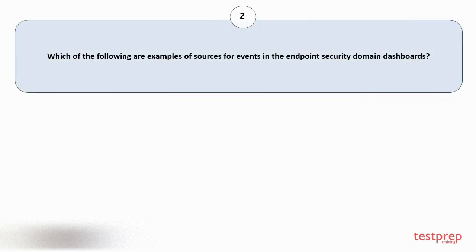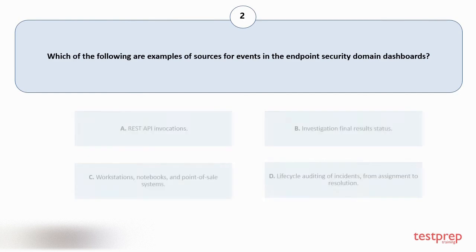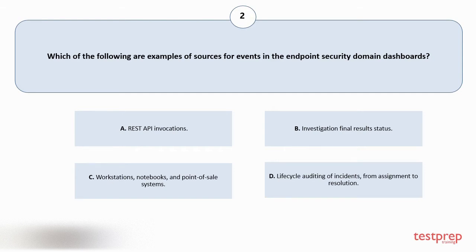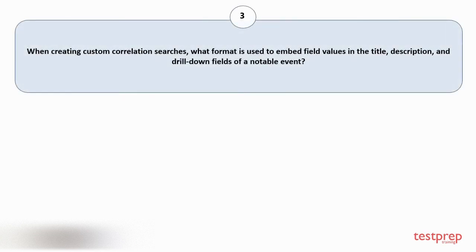Question number two: which of the following are examples of sources for events in the Endpoint Security domain dashboards? Options are: A) REST API invocations, B) investigation final results status, C) workstations, notebooks and point of sale systems, D) life cycle auditing of incidents from assignment to resolution. The correct answer is option D.